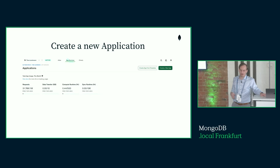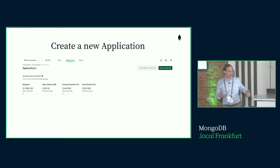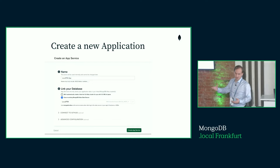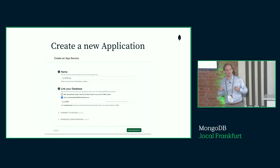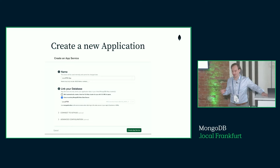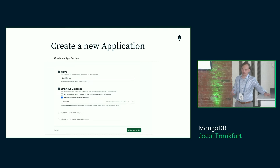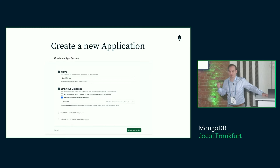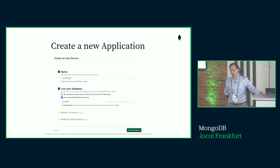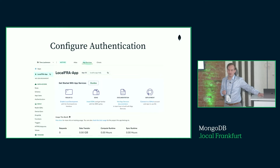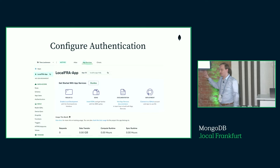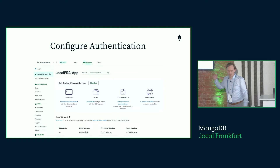With App Services, you start by creating a new application — it's not an infrastructure you deploy, but you define resources in the apps you create. Once you create a new app, you make a few decisions: first, a name (which I personally find the hardest — in my demos everything is called 'test', which I don't recommend for production). Then you link the application to an existing cluster — in my case, the serverless instance already deployed.